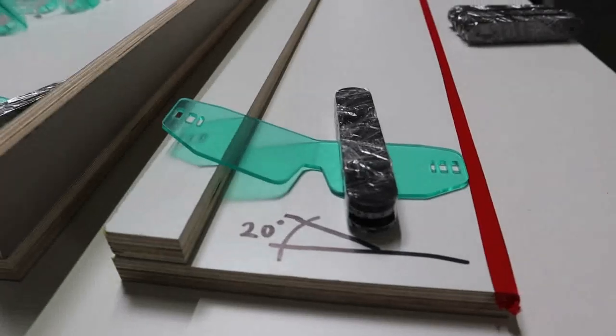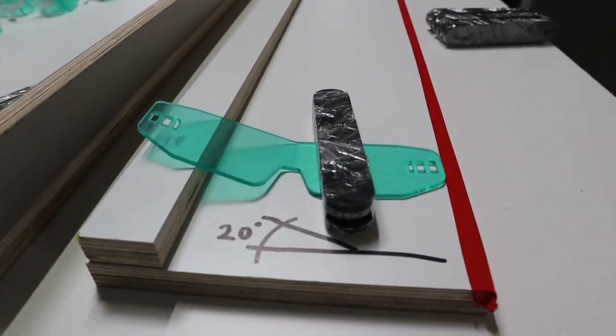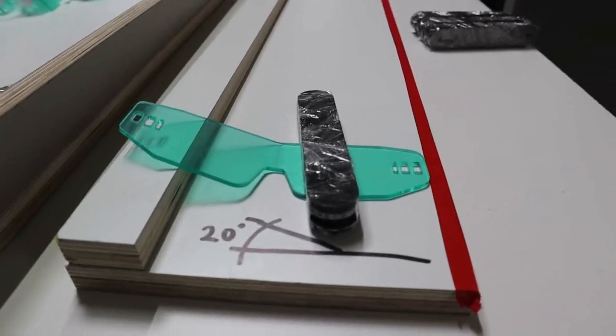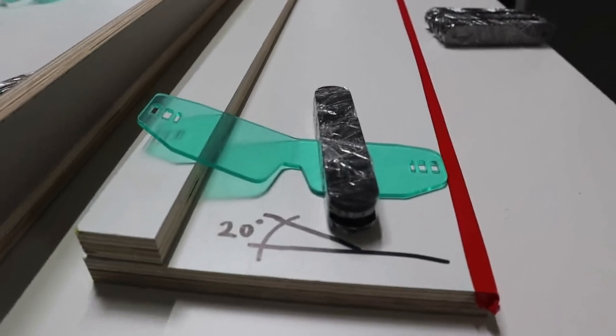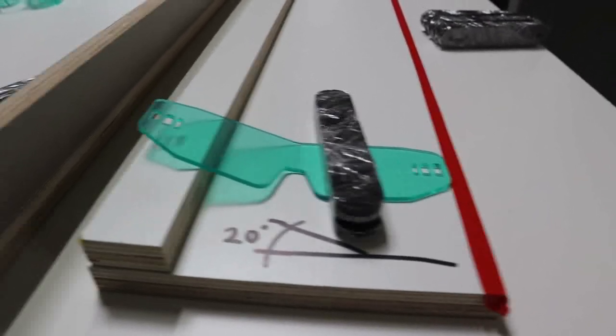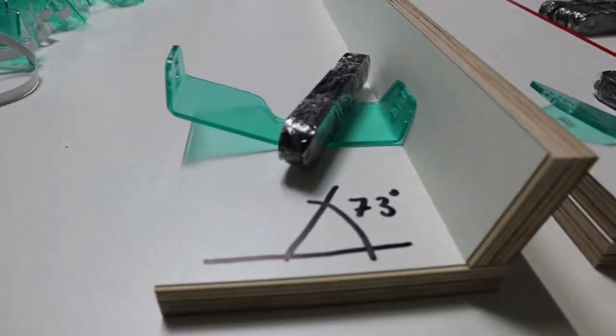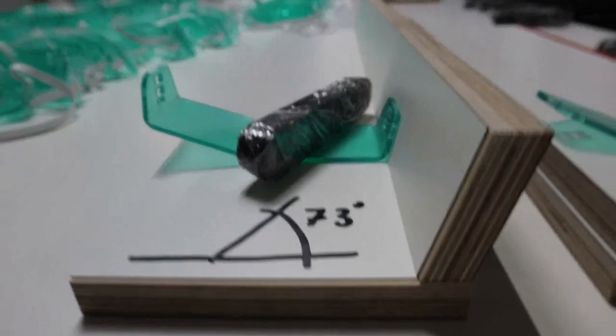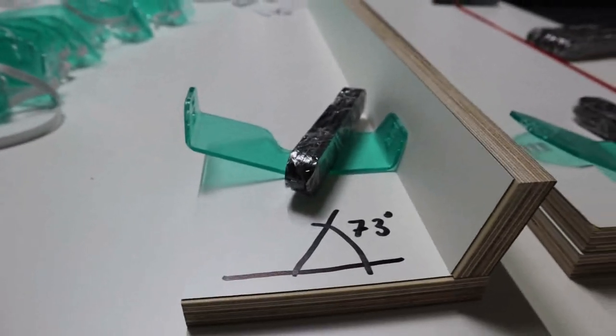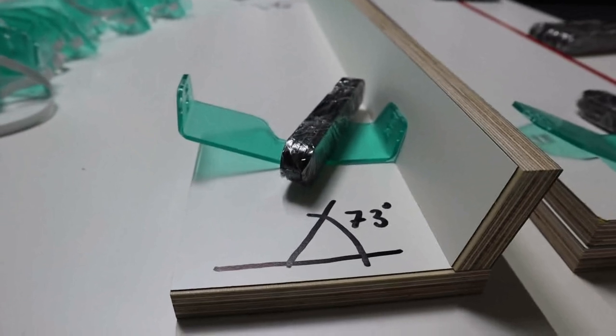To bend the glasses you only need two jigs. The first jig is nothing more than this, and it will bend the nose piece to 20 degrees. The second one is this—it's nothing more than this, and it will bend the sides to 73 degrees.